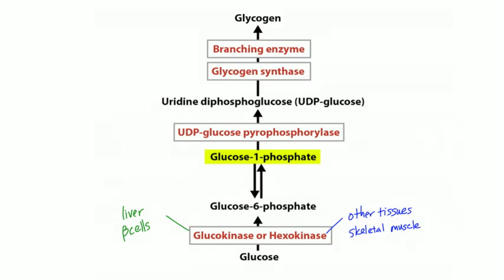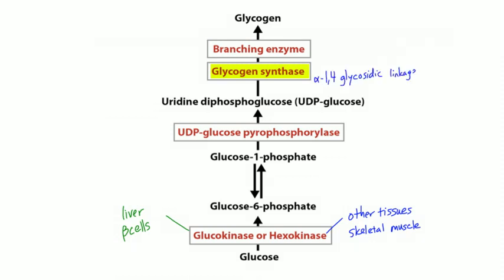The next step is to convert glucose-1-phosphate to uridine diphosphoglucose, or UDP-glucose, catalyzed by UDP-glucose pyrophosphorylase. This primes the glucose to be attached to a larger molecule. The enzyme that attaches UDP-glucose to the expanding glycogen molecule is glycogen synthase — the rate-limiting enzyme for glycogen synthesis. It makes alpha-1,4 glycosidic linkages, making the chain longer and longer.